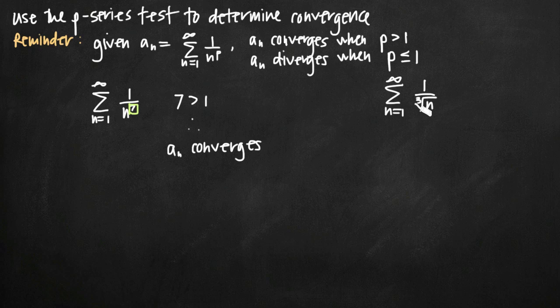This series here, 1 over the 3rd root of n, may look a little bit different, but what we remember is that when we have a root like this, instead of writing the 3rd root like this, we can also write it where we have 1 over n raised to the 1/3 power. Remember that a square root is n to the 1/2, 3rd root is n to the 1/3. So we can convert it to that form and then we can say that our exponent is 1/3.